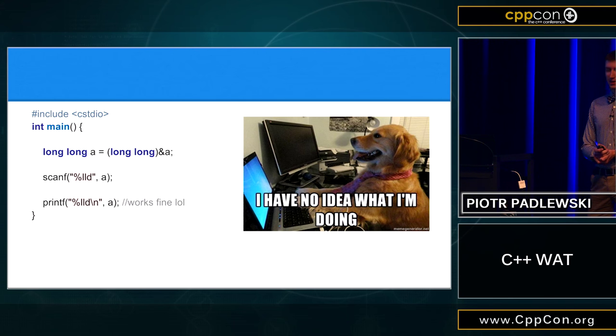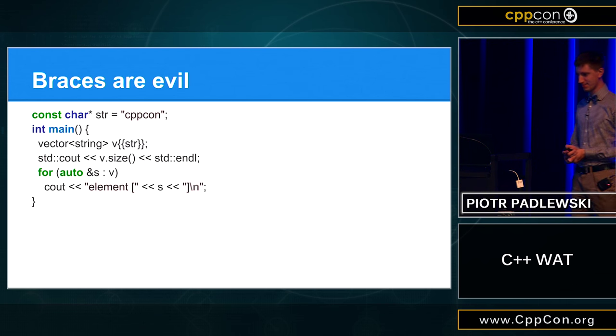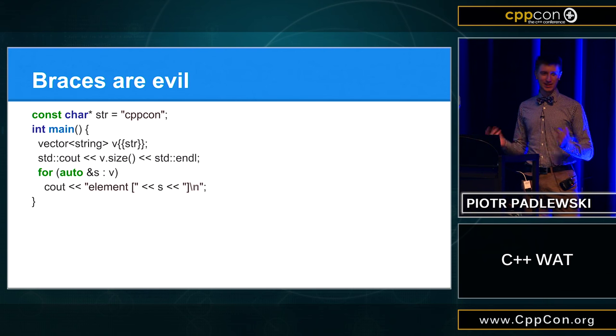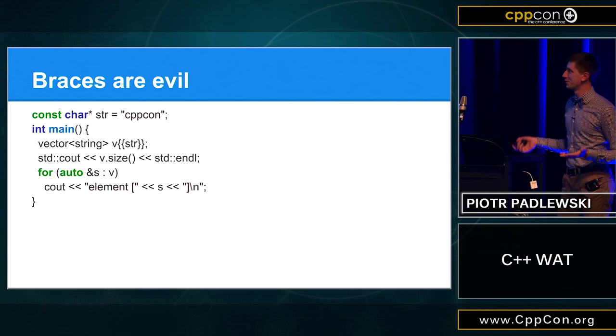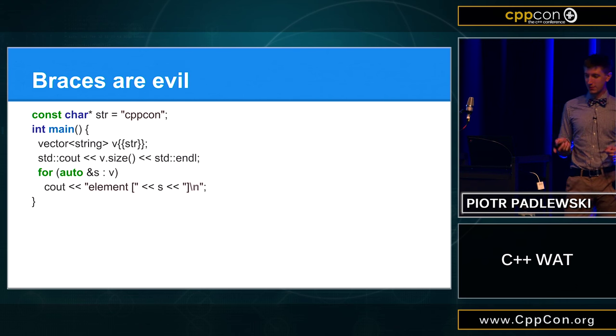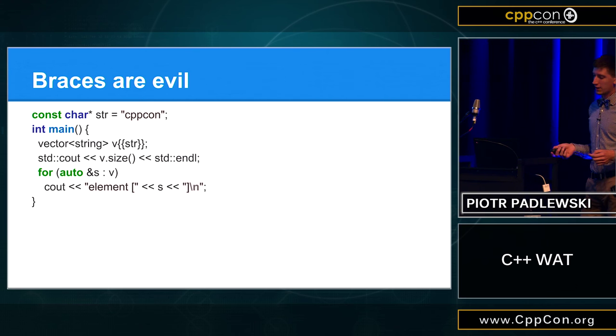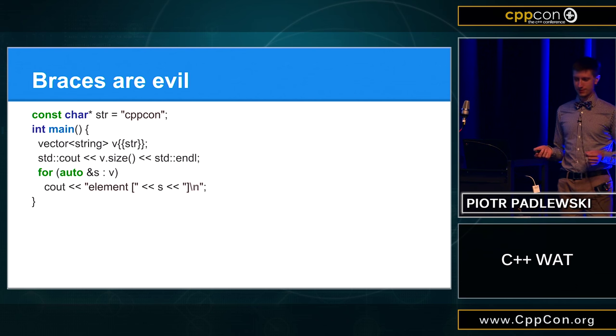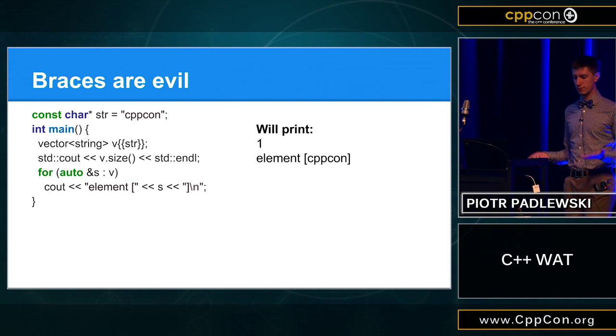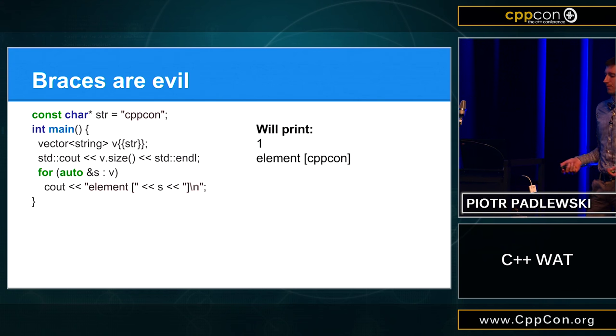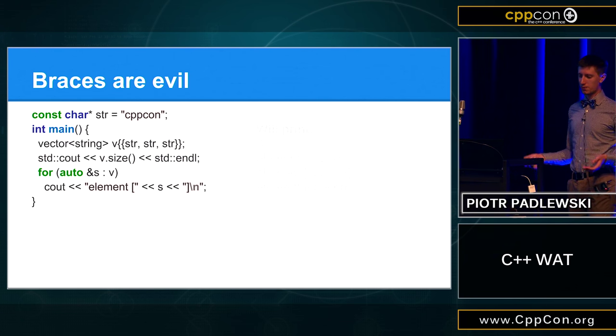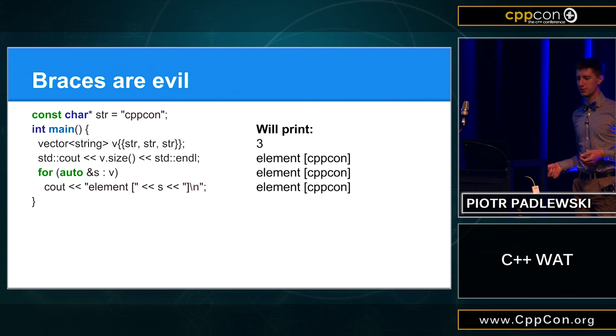Okay. So, let's talk about braces. So, in C++11, we have something called new syntax, right? To initialize variables. And this is brace initialization. So, in this example, we are trying to build a vector with one string inside. Right? And, of course, this thing will produce one and print the element with cppcon. And, of course, if we will put the three variables, the same thing will happen, right? We will have three elements and each of them will be cppcon.